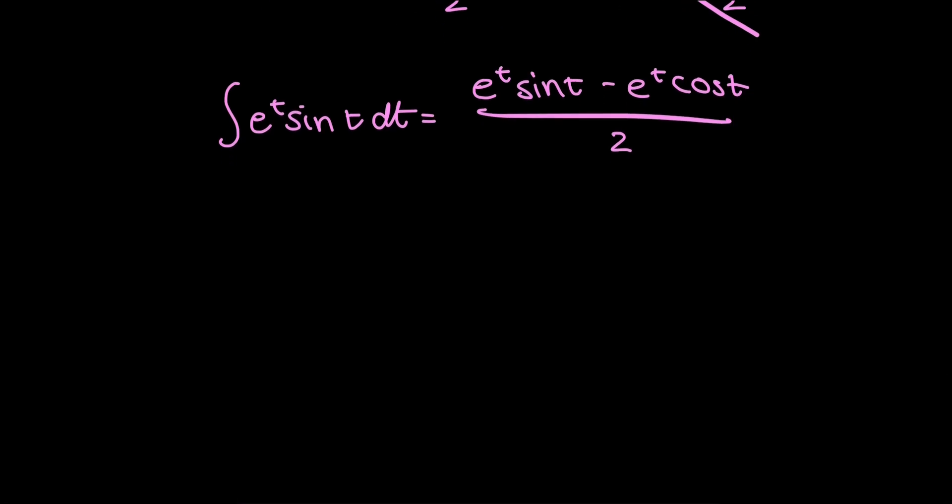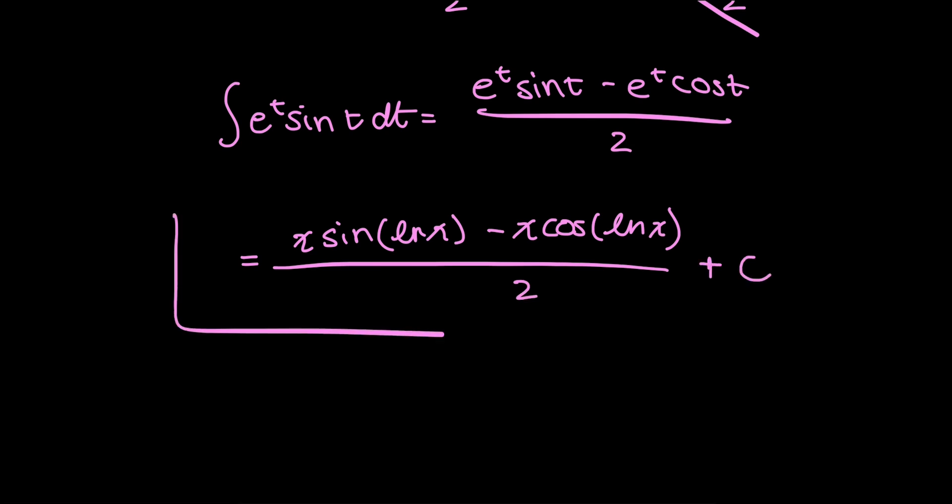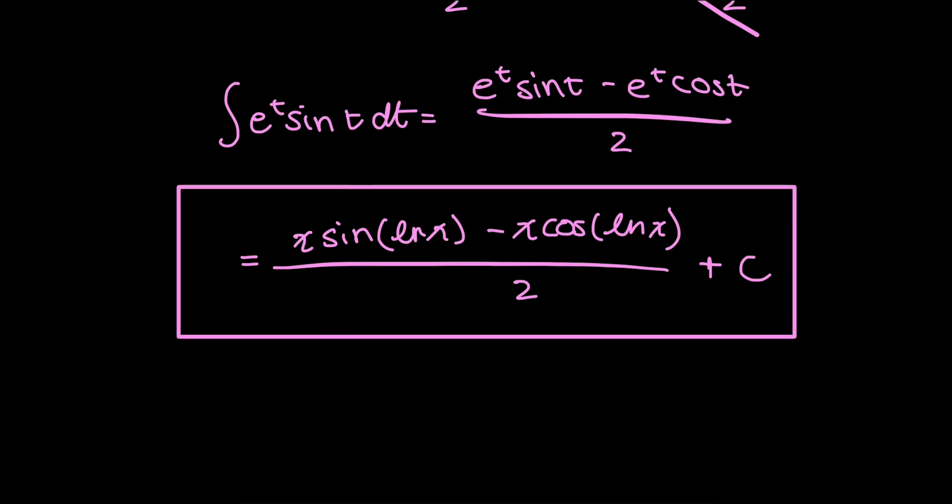So the whole integral is equal to x sine log x minus x cosine log x all over two, and we can't forget the arbitrary constant, plus c. And that's it.